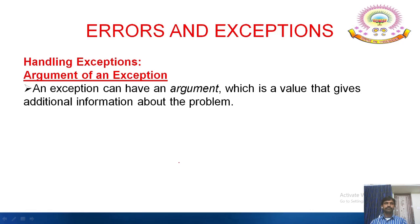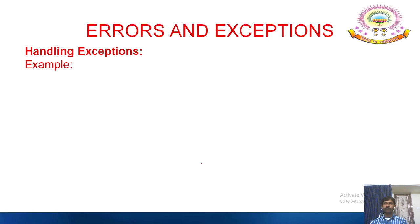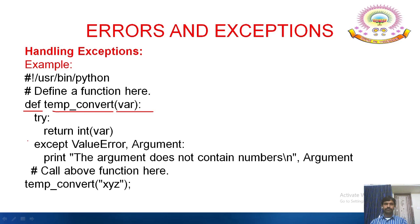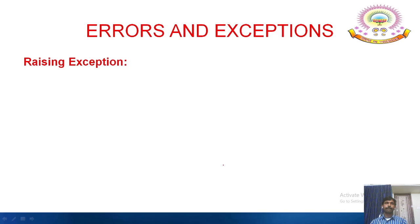An exception can have an argument, which is a value that gives additional information about the problem. The syntax is: try — do operations; except ExceptionType as argument — print value of argument. For example: def temp_convert(var) — try: return int(var); except ValueError as argument: print 'The argument does not contain numbers'. Here, xyz is passed as a string, so a ValueError is raised and the output displays 'The argument does not contain numbers'.